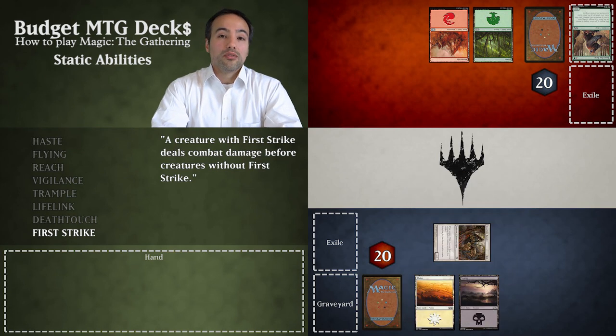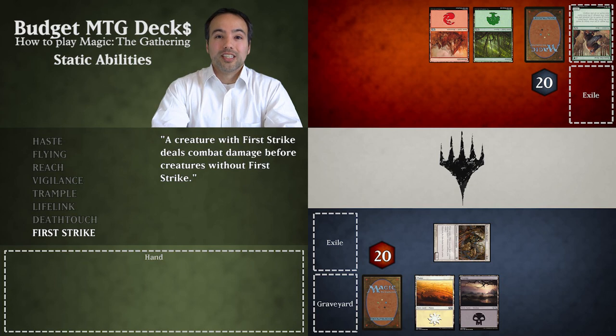Now we have looked at a couple of the more common static abilities. I'm David and this was Budget MTG Decks. Join us next time as we have a look at a new type of card — Enchantments.